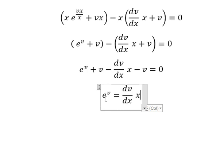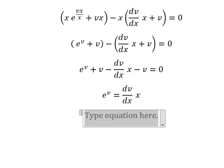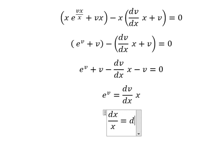We put dx and x on the left side, and e to the power of v on the right. This can be rewritten as dx over x equals e to the power of negative v dv.